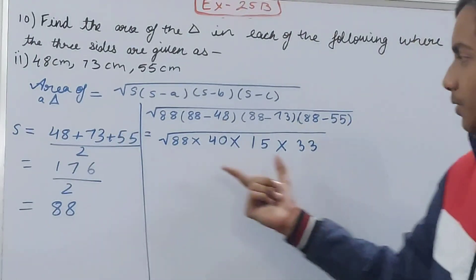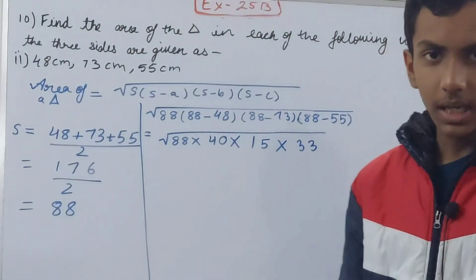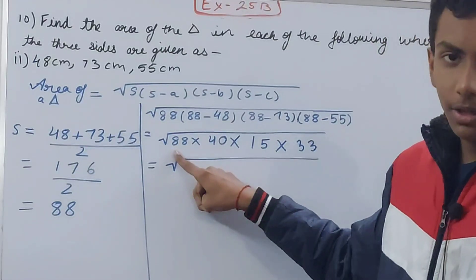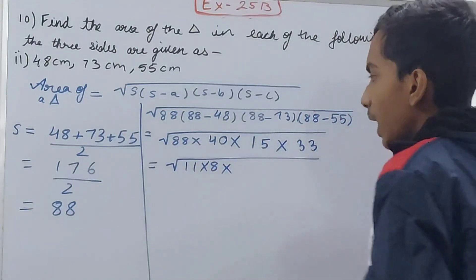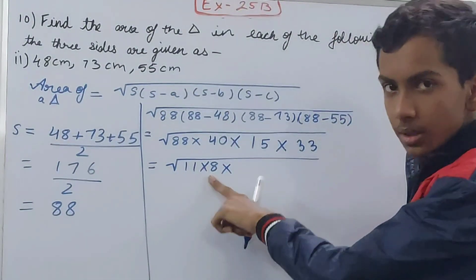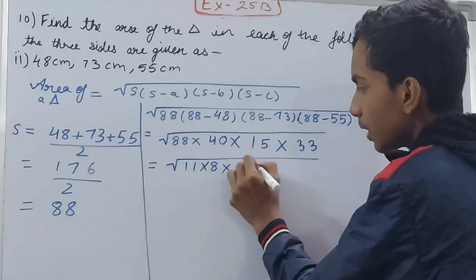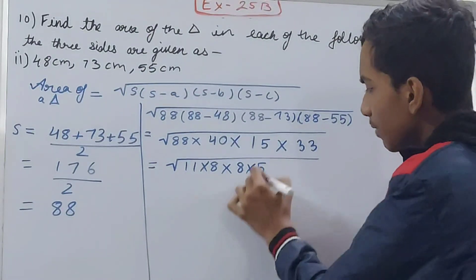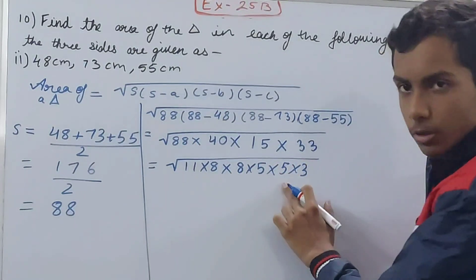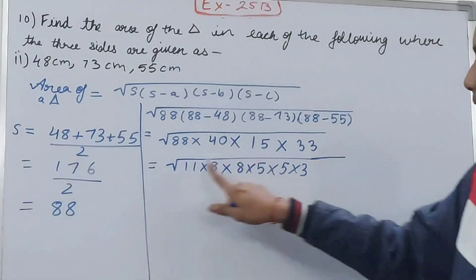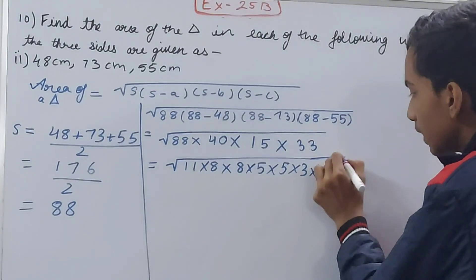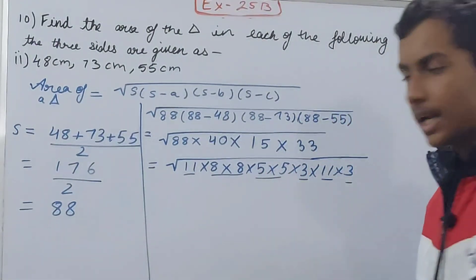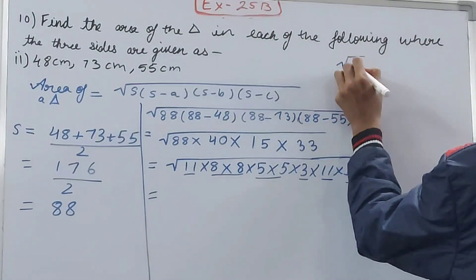Now we break these down into factor pairs to make calculation easier. Write 88 as 11 × 8. Then 40 as 8 × 5 — this pairs the 8 from 88. Then 15 as 5 × 3 — pairing the 5 from 40. And 33 as 11 × 3 — pairing the 11 from 88. So we now have pairs: (8 × 8), (11 × 11), (5 × 5), and (3 × 3).